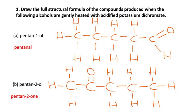Question 1B asks for the structural formula of the compound formed when you gently heat pentan-2-ol with acidified potassium dichromate. Pentan-2-ol is a secondary alcohol, so oxidation gives a ketone — pentan-2-one: CH3C(=O)CH2CH2CH3. The C=O is on carbon 2 because the OH was on carbon 2, and oxidation removes the hydrogen from the OH and a hydrogen from the adjacent carbon. Question 1C involves hexan-3-ol, a secondary alcohol, so oxidation gives the ketone hexan-3-one: CH3CH2C(=O)CH2CH2CH3, where the C=O is on carbon 3 because the OH was on carbon 3. Question 1D involves hexan-1-ol, a primary alcohol, so gently heating with acidified potassium dichromate gives the aldehyde hexanal: CH3CH2CH2CH2CH2C(=O)H.